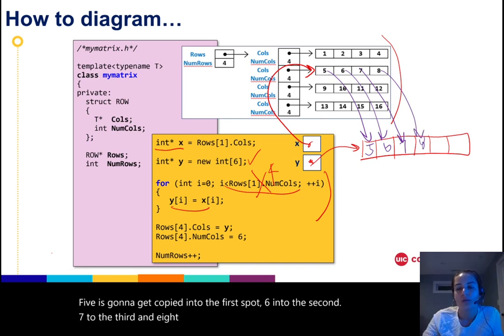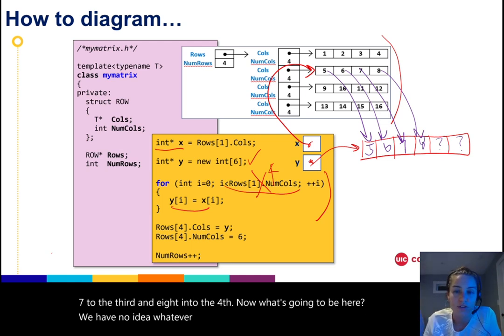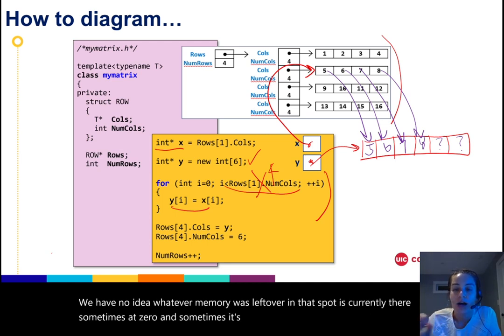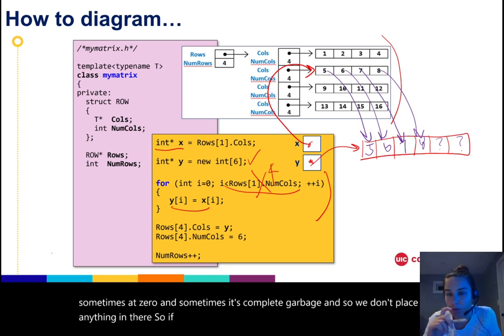Five is going to get copied into the first spot, six into the second, seven to the third, and eight into the fourth. Now what's going to be here? Well, we have no idea. Whatever memory was left over in that spot is currently there. Sometimes it's zero and sometimes it's complete garbage, and so we don't place anything in there. So if we try to access it later, we're going to be in trouble.